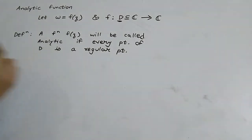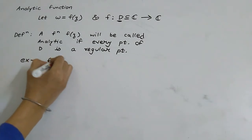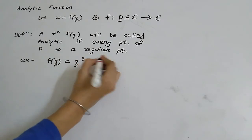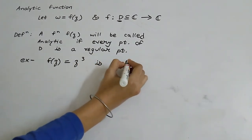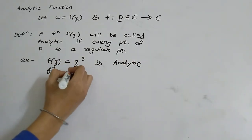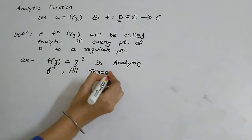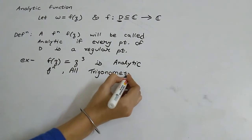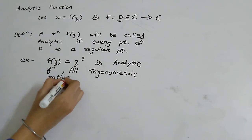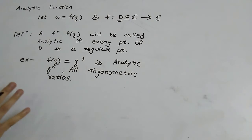Now we will see one example of analytic function. f(z) = z³ is an analytic function, and all trigonometric ratios are also examples of analytic functions.